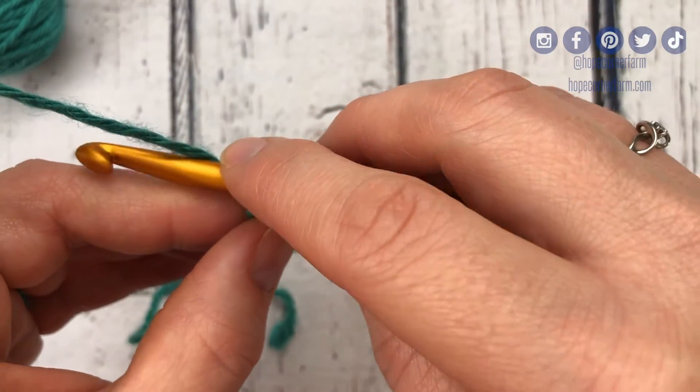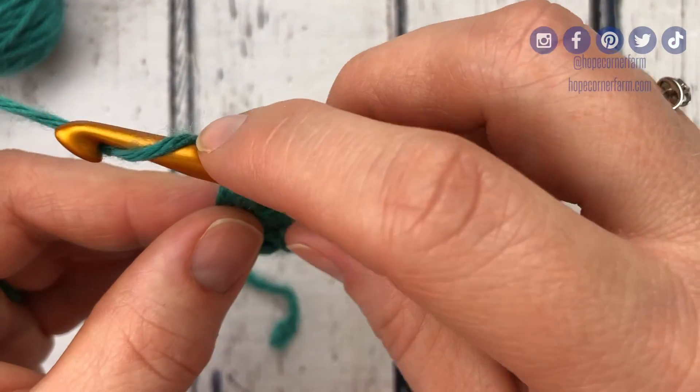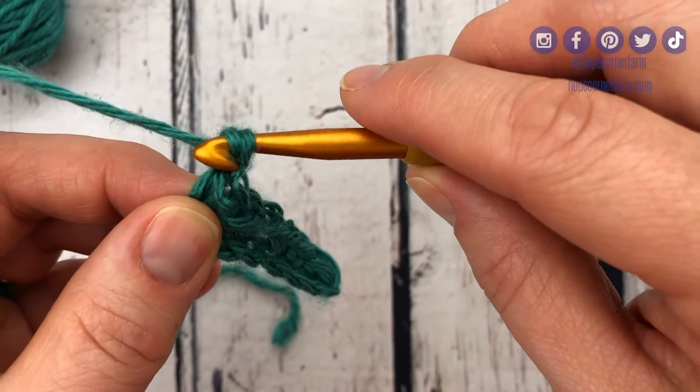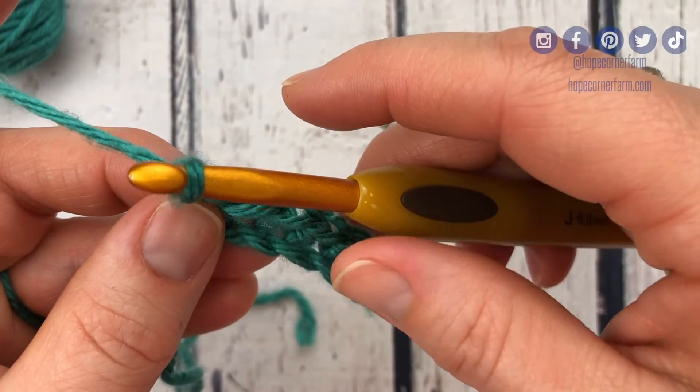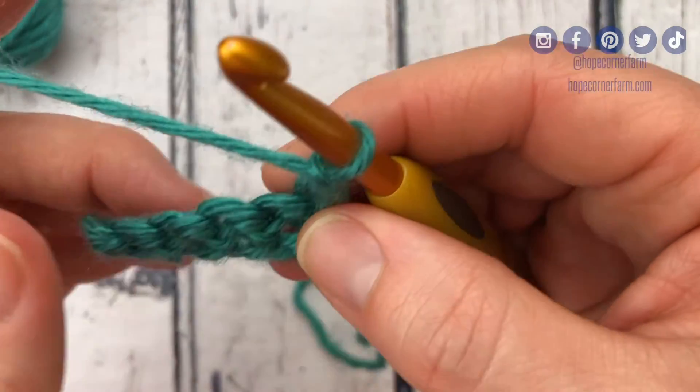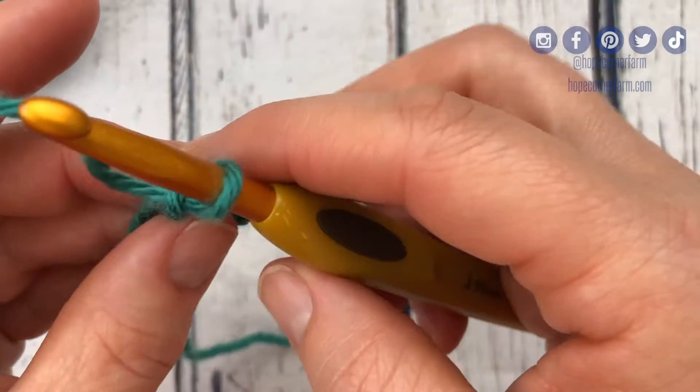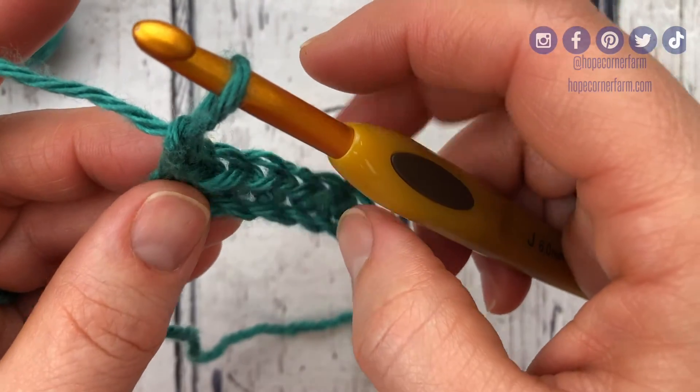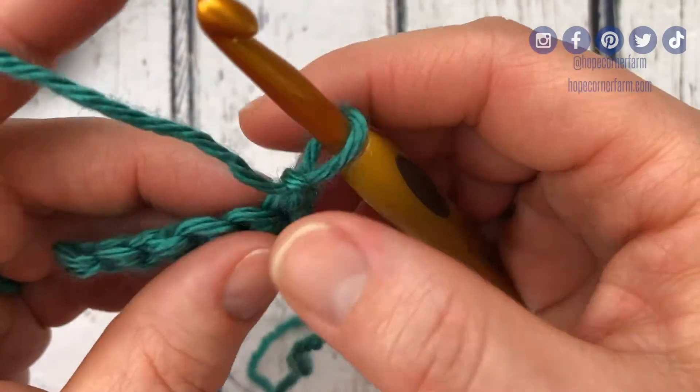I'll show you one more time. I'm going back, rotate, around, pull through, chain one. Now turning is simply taking my work from working towards my hand to turning it to face away. So the turn is simply going from this, now to this.